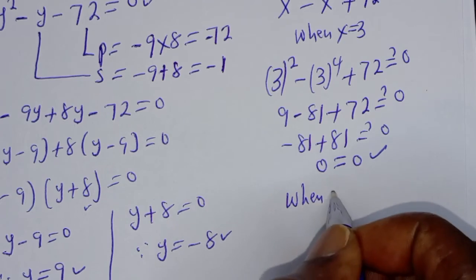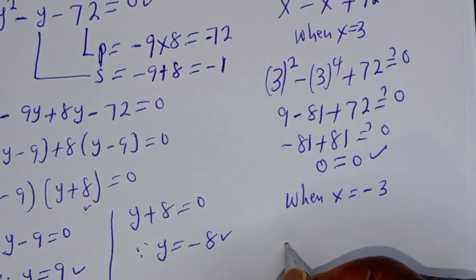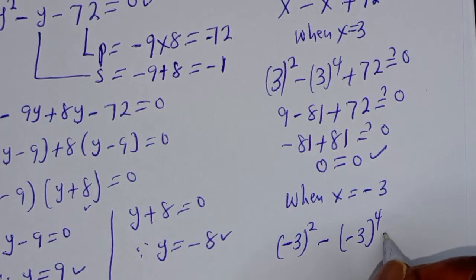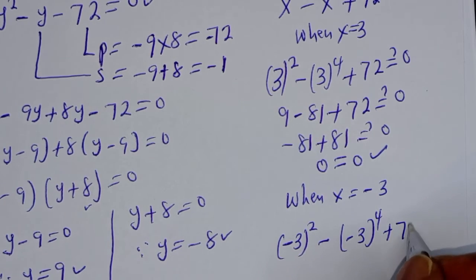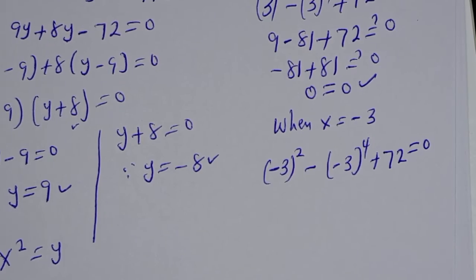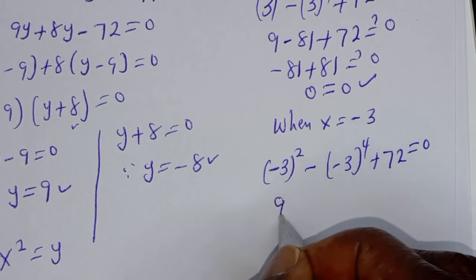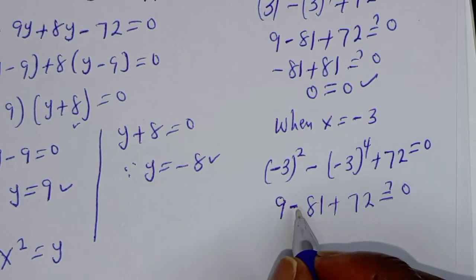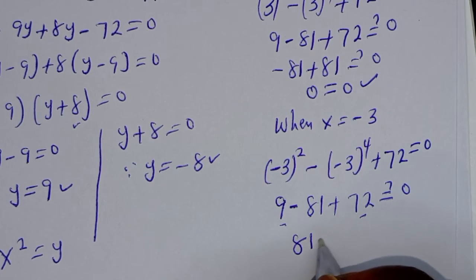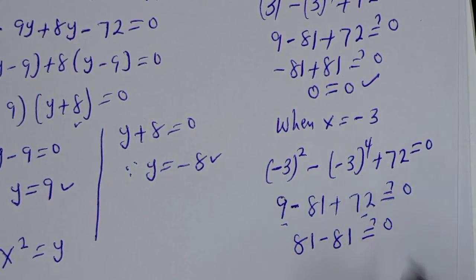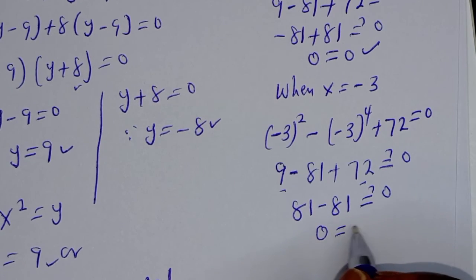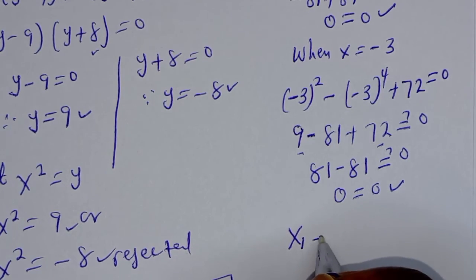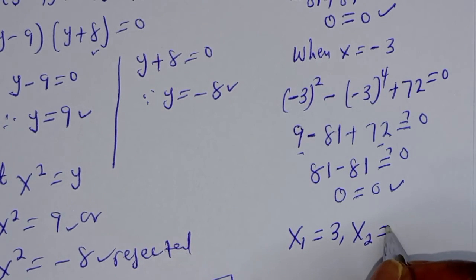Also, when x equals minus 3: (minus 3) squared minus (minus 3) raised to the power 4 plus 72 must equal 0. That is 9 minus 81 plus 72 equals 0, giving 0 equals 0, which is also true. Therefore, our final answers are x₁ equals 3 and x₂ equals minus 3.